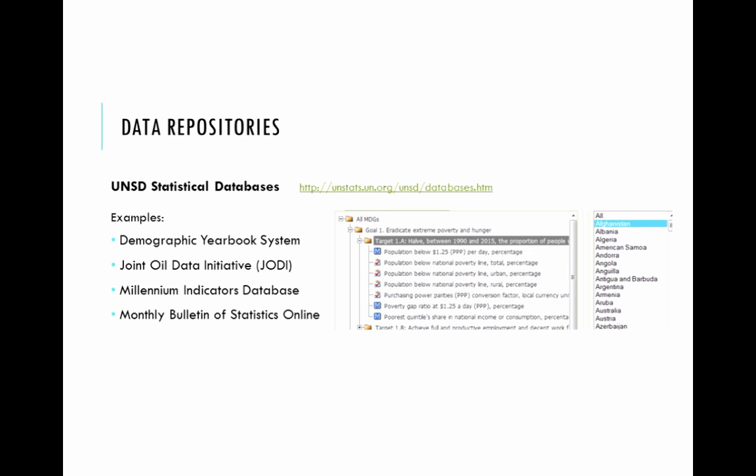Talking about the UN Statistical Division — remember that is different than UN Data — here are some examples of different types of data you can find in the statistical databases: the Demographic Yearbook, the Joint Oil Data Initiative (which gives a breakdown of gas versus oil production rates by country), and the Millennium Indicators Database. That's a current initiative of the UN that is channeling into the Sustainable Development Goals. You can look at this information by country.